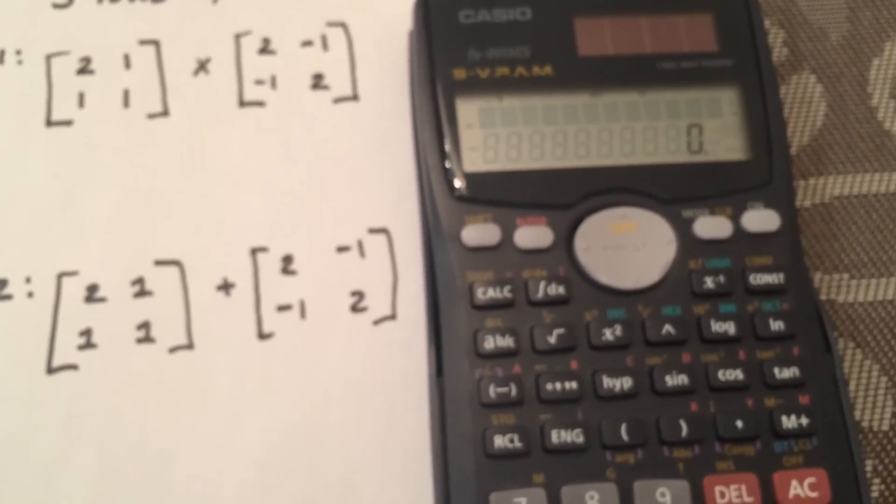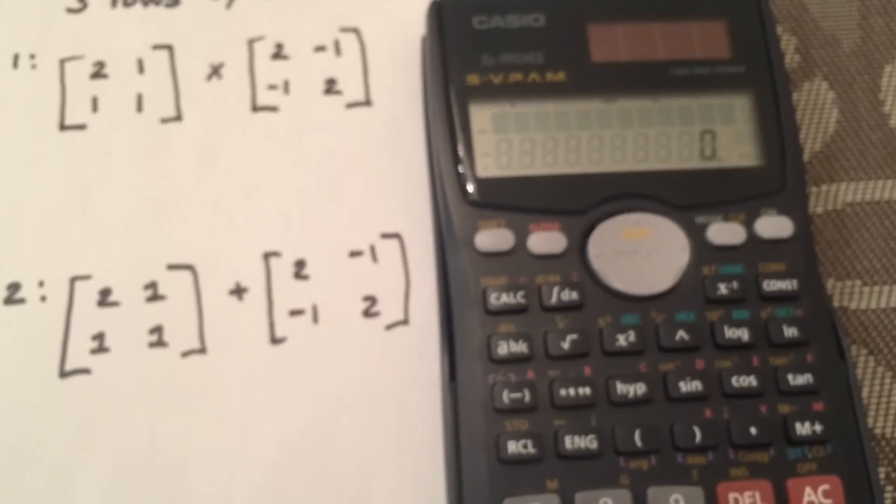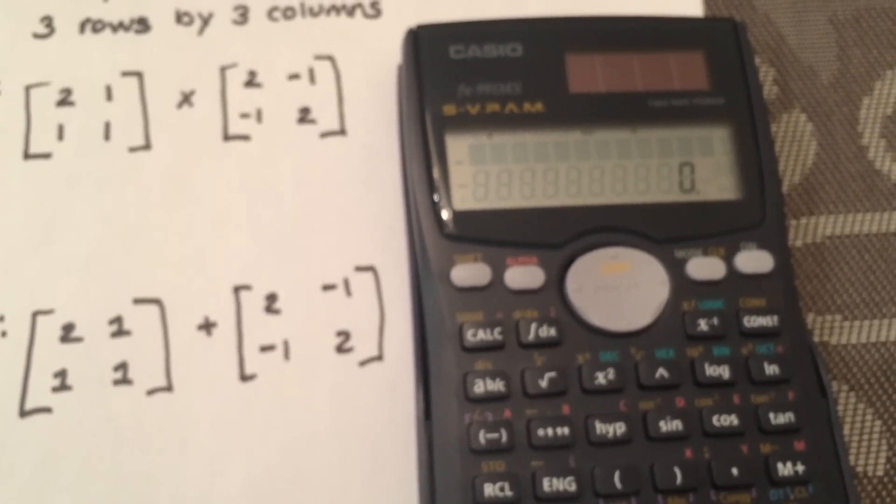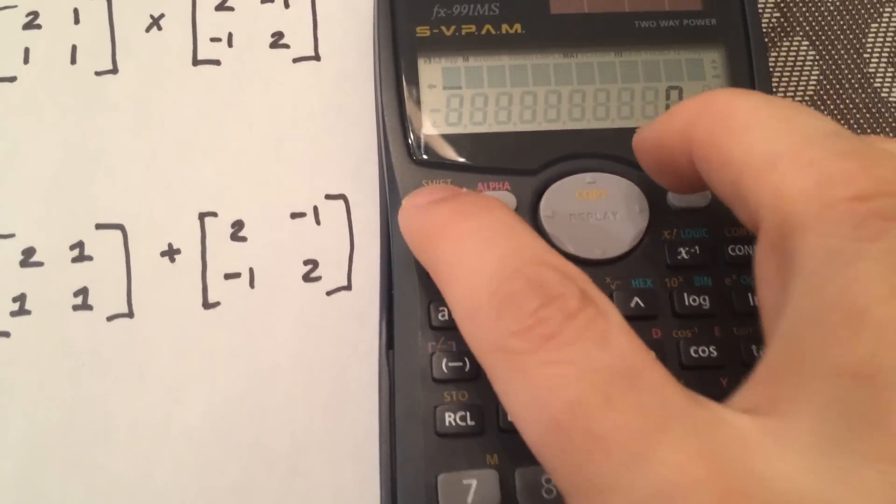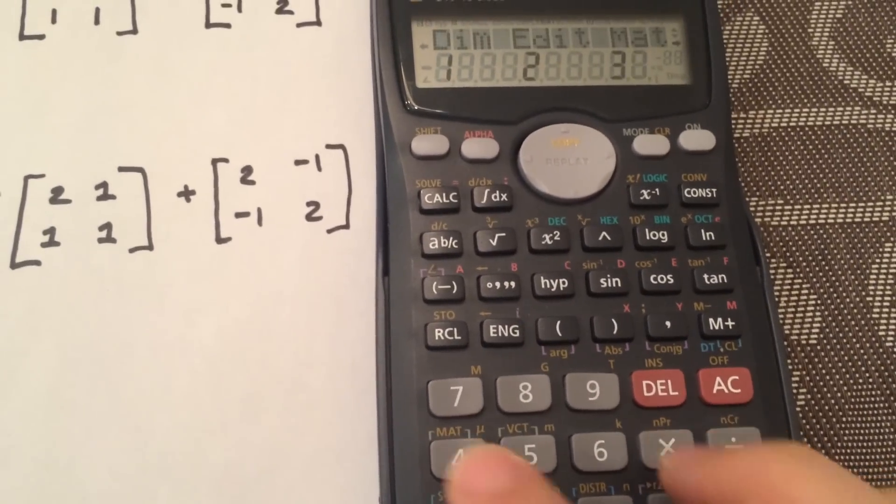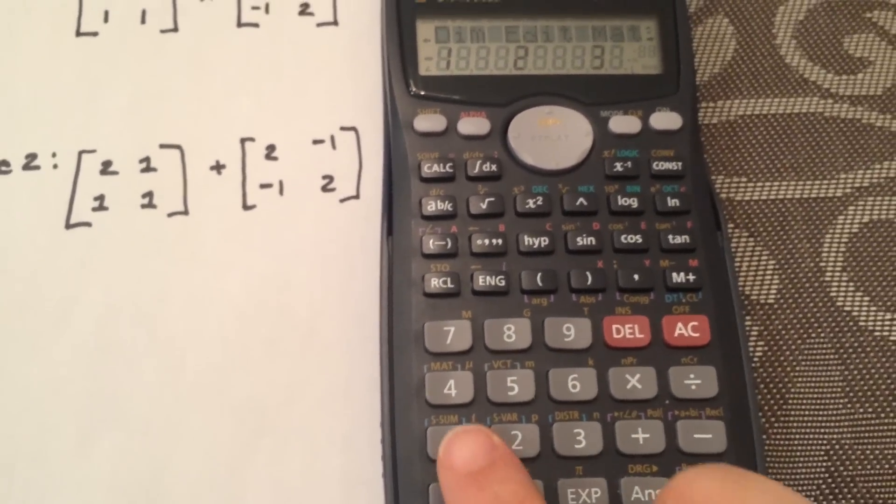After that, you need to select the dimensions of your matrices. So what we're going to do is shift, and then 4, and then 1, the dimensions.